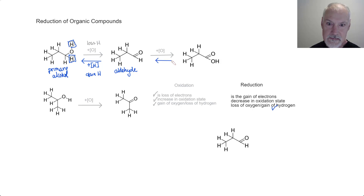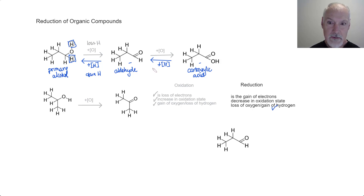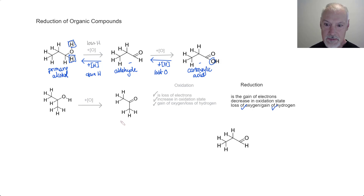Similarly, moving from here to here, we bring in our reducing agent, and we can convert a carboxylic acid into an aldehyde. I can recognize moving from this species to this species that I've essentially lost an oxygen — again, one of my signs of reduction. Having it undergo reduction in the presence of a reducing agent, we end up with a secondary alcohol.